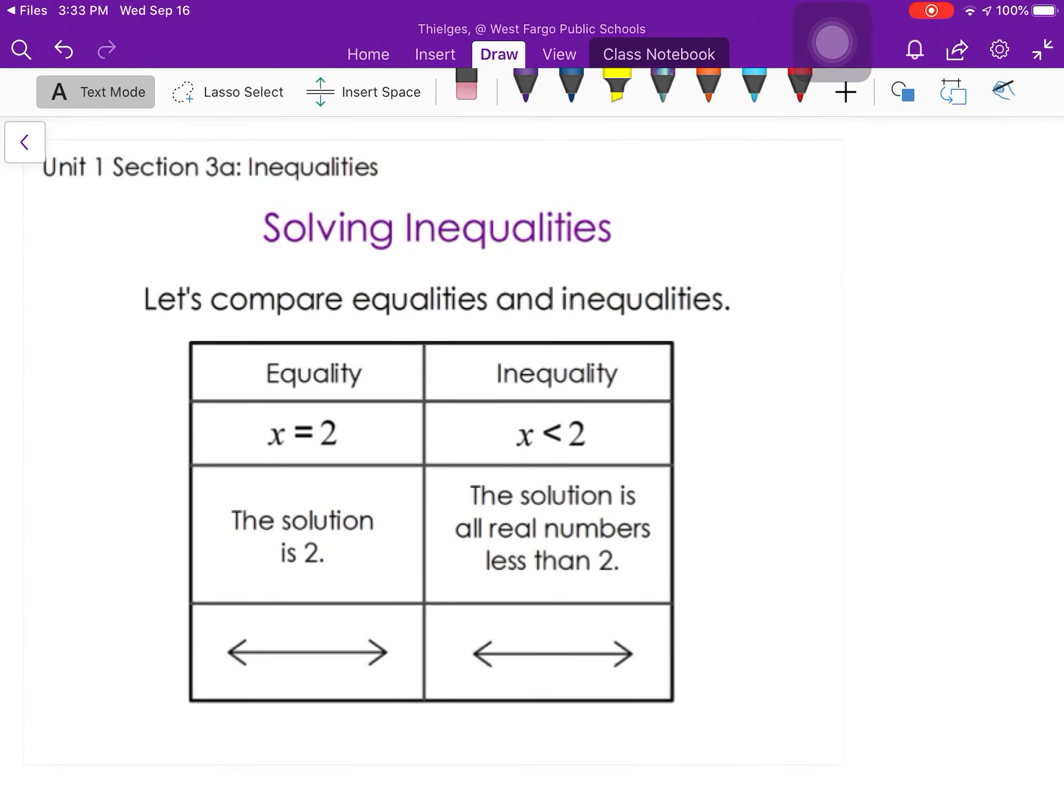We got an equality, so equal sign means that there's one solution where x is equal to 2 and on the number line what that means is at 2 you would have one particular spot as your answer, that would be 2, that's it.